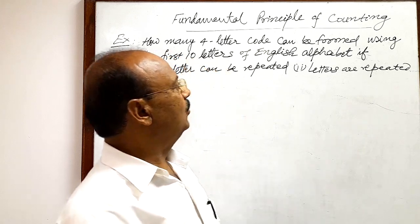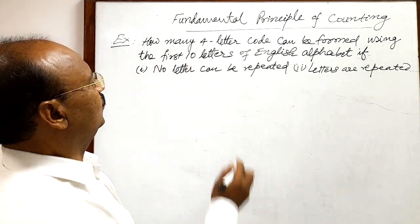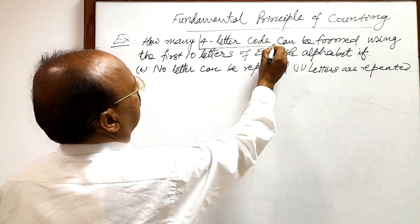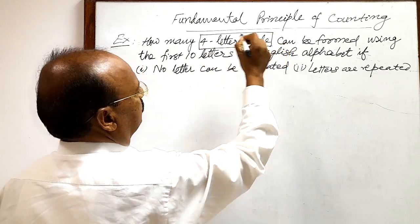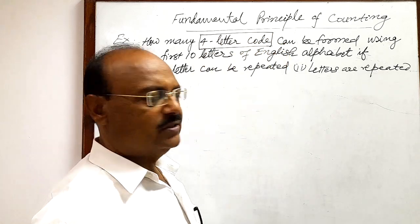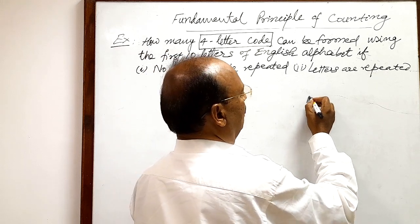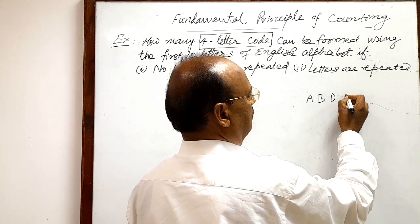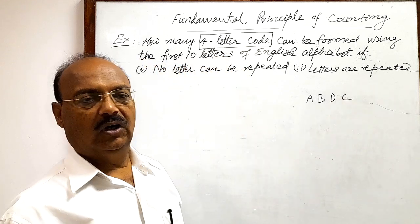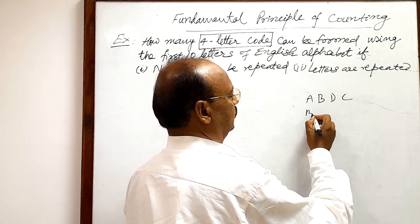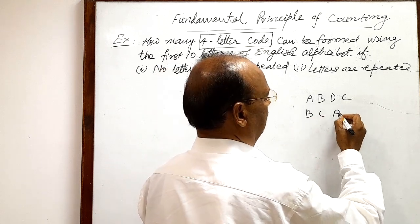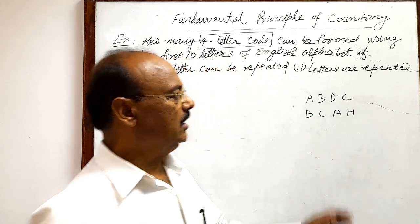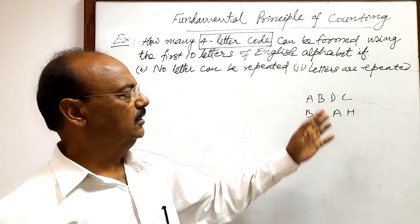So, what we have to form? We have to form four letter code. Four letter code means like suppose you write A, B, D, C or you write B, C, A, H. So, these are four letter codes.